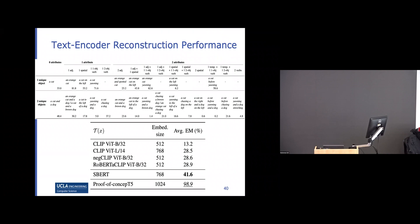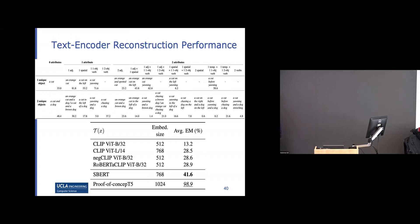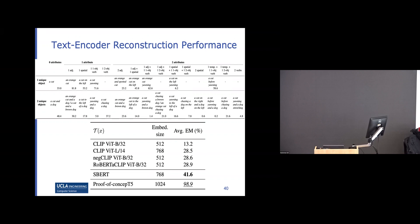Even with a strong text encoder, we can recover only about 40% of the text content — meaning 60% of the time, the representation doesn't capture what's in the sentence. As a proof of concept, when we train the T5 model end-to-end with both encoder and decoder jointly, it can generate back the original text, confirming the bottleneck is specifically in the frozen CLIP encoder.